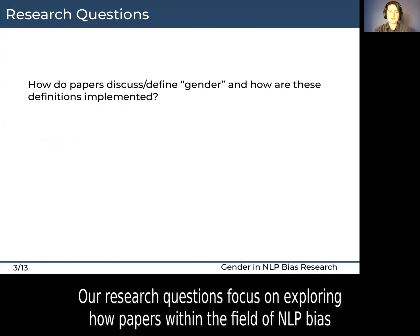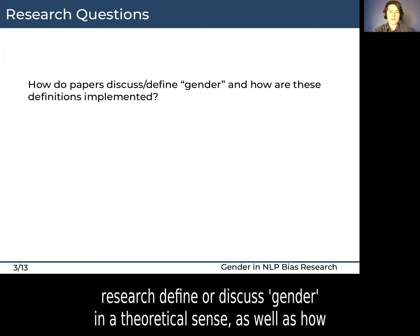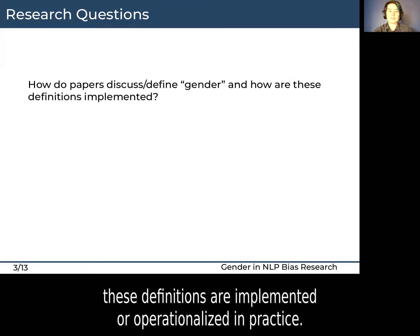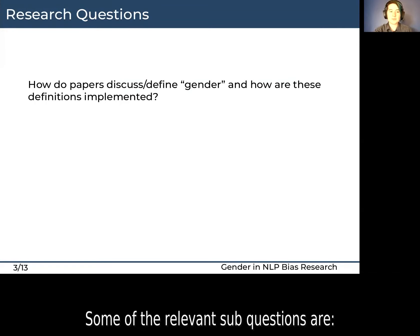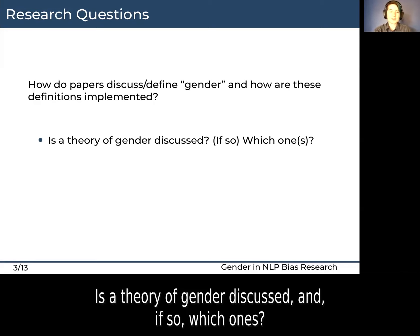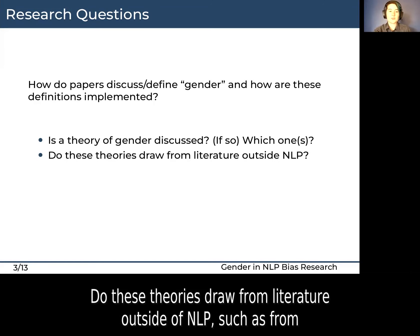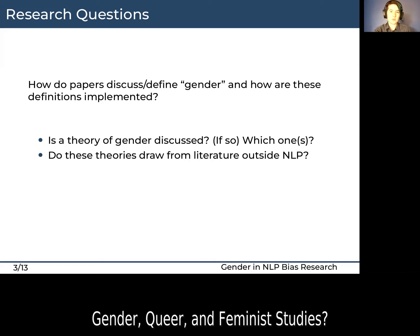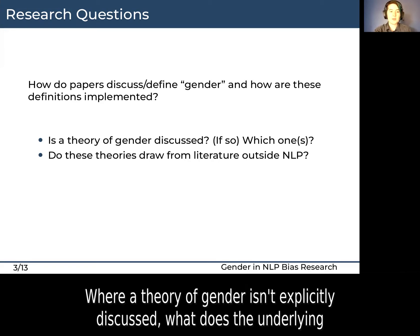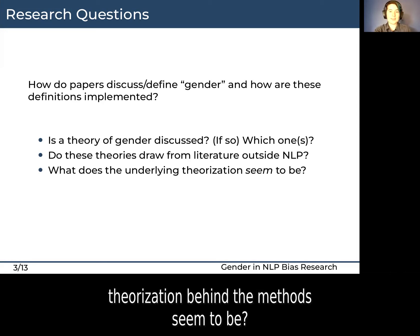Our research questions focus on exploring how papers within the field of NLP bias research define or discuss gender in a theoretical sense, as well as how these definitions are implemented or operationalized in practice. Some of the relevant sub-questions are: is a theory of gender discussed, and if so, which ones? Do these theories draw from literature outside of NLP, such as from gender, queer, and feminist studies? Where a theory of gender isn't explicitly discussed, what does the underlying theorization behind the methods seem to be?